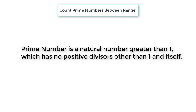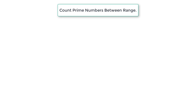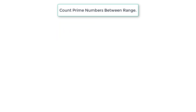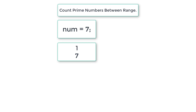Let's see the definition of a prime number. A prime number is a natural number greater than 1 which has no positive divisors other than 1 and itself. For example, 4 is divisible by 1, 2, and 4 — so it's not a prime number. But 7 is divisible only by 1 and itself, so 7 is a prime number.